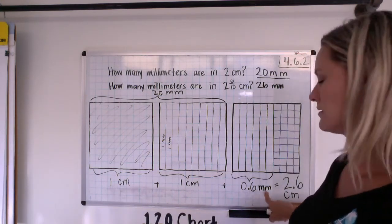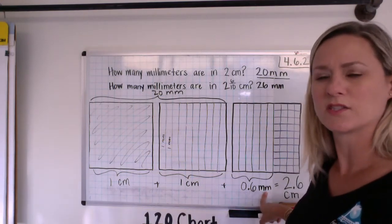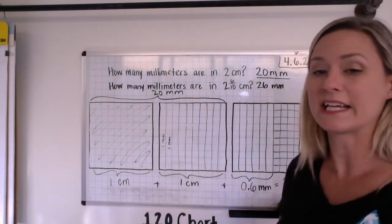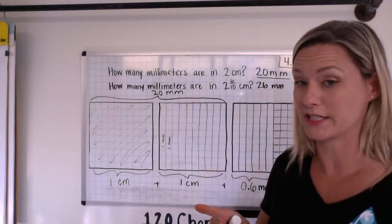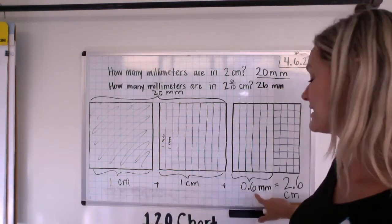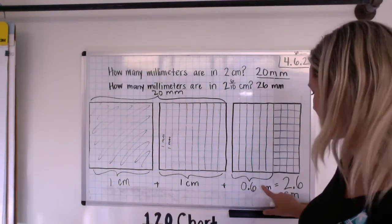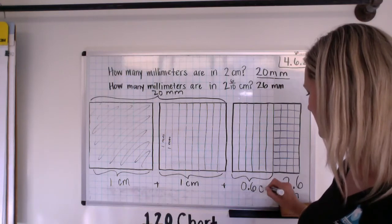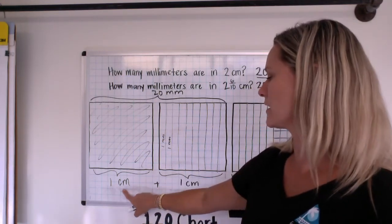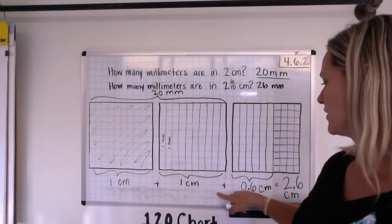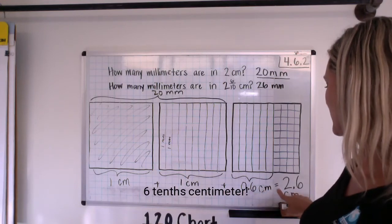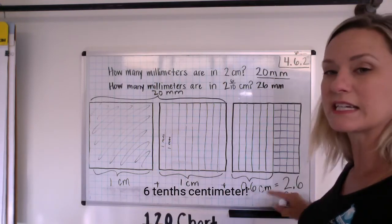All right, oops, I think I mislabeled that. So, I'm going to check this out. I needed 6 millimeters to make up 6 tenths of a centimeter. So, I made a mistake right there, but that's okay. Mistakes happen, and I'm going to fix it. So, 1 centimeter plus 1 centimeter plus 6 millimeters equals 2 and 6 tenths centimeters.